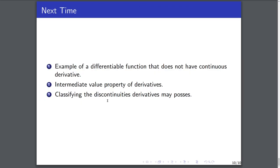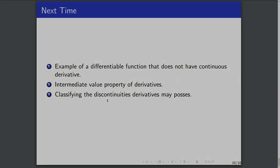Next time, we're going to give an example of a differentiable function that does not have a continuous derivative. We'll prove the intermediate value property for derivatives, and in doing so, we'll be able to classify the different types of discontinuities derivatives can have. That's all for this video — be sure to like, comment any questions you have, and subscribe for more content.